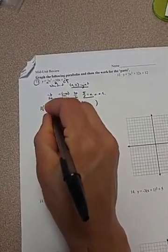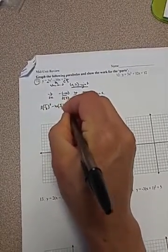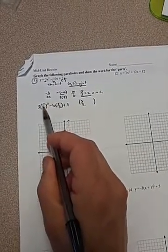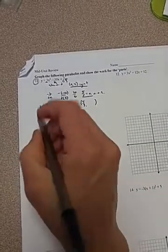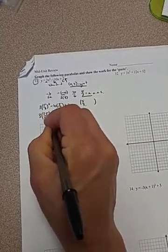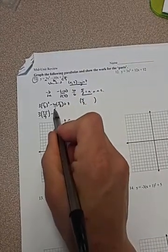So I'm going to plug in 5 thirds. Fractions are not always our favorite thing, but we have to deal with them. Remember, we need to do exponents first. I'm going to square this fraction first. So when I square the fraction, I get 25 over 9. Here, I'm just going to multiply straight across. I'm going to go ahead and put the 10 over 1.